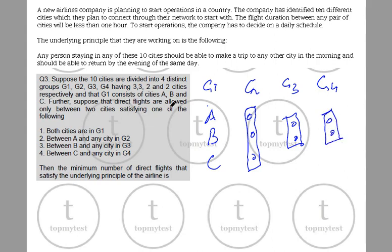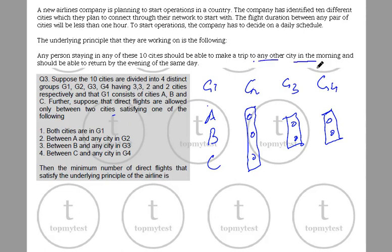Now the only flights that are allowed are: among cities both in G1, between A and any city in G2, between B and any city in G3, and between C and any city in G4. Remember, there should be both to-and-fro flights in the morning and to-and-fro flights in the evening. This is the underlying principle. Let's calculate the morning flights.